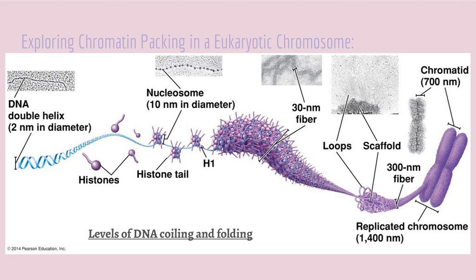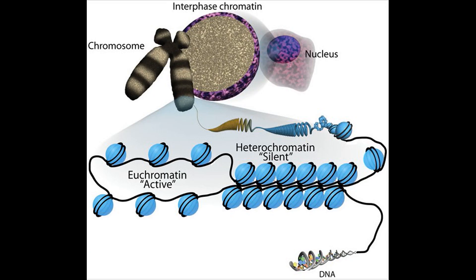But chromatin also affects gene expression in several ways. One is again the degree of compactness. Chromatin usually occurs in two forms: the less condensed euchromatin, and the more condensed form heterochromatin. Genes within heterochromatin usually aren't expressed because the compacted DNA inhibits the binding of transcriptional machinery.